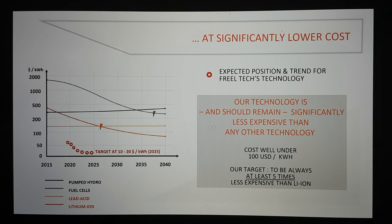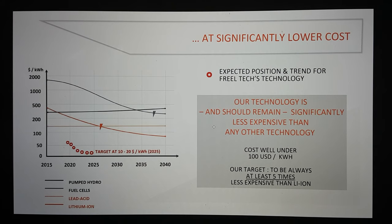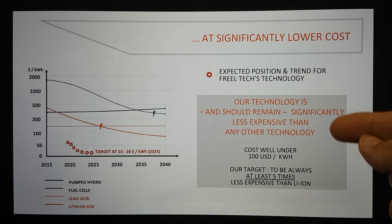What they're seeing here is at a significantly lower cost. They've got lead acid, pumped hydro. They're saying it's much cheaper to store energy than lead acid or pumped hydro and even lithium ion. This is very impressive. They've even got fuel cells here, so much cheaper. Already they are nearly an order of magnitude cheaper than pumped hydro and lithium ion. They're intending to take that right down to be at least an order, if not more than one order, magnitude cheaper. $10 to $20 per kilowatt hour by 2025. Our technology is and should remain significantly less expensive than any other technology. Wow.